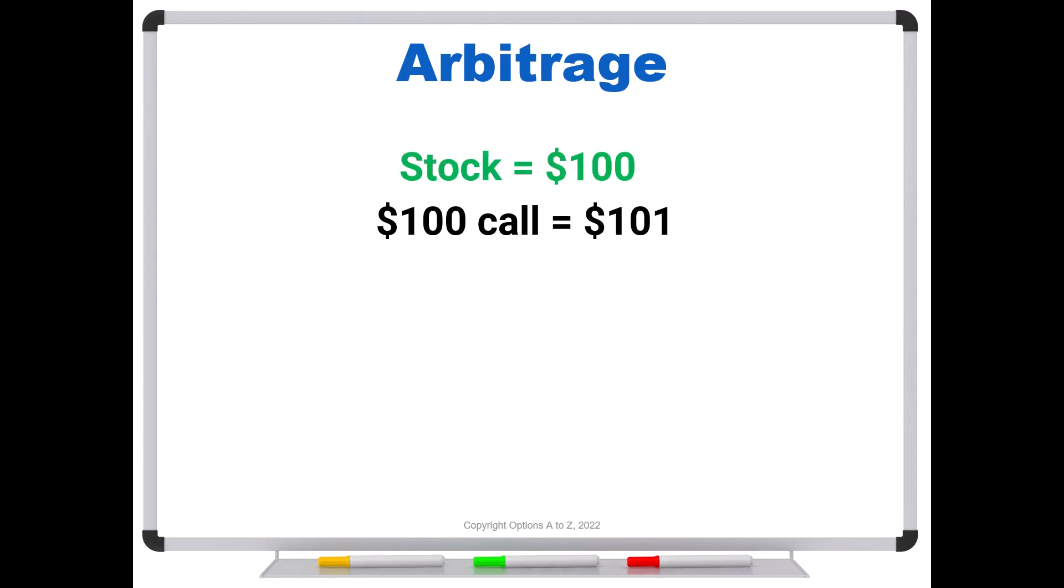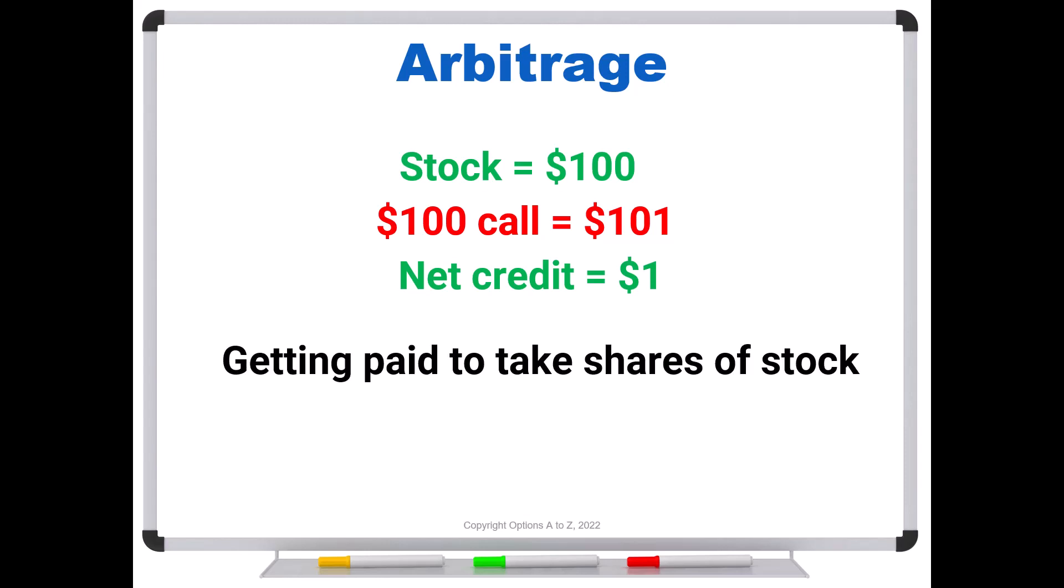Arbitragers would come in and buy the stock for a hundred and they would sell the call for one-oh-one. And this of course is going to give them a net credit of a buck, right? If you spend a hundred dollars and then turn around and receive a hundred and one on a net basis, you have a dollar in your pocket. You could look at it as though you sold the call for a hundred and one and took a hundred of those dollars to buy the stock. So this is what sets up the arbitrage. You don't even need your own cash to create the trade. There's absolutely no reason to not do it. So again, it's getting paid to take the shares of stock.